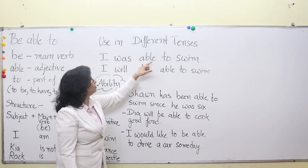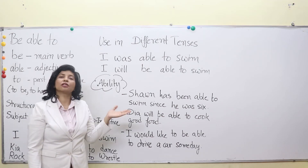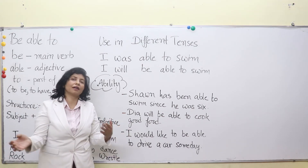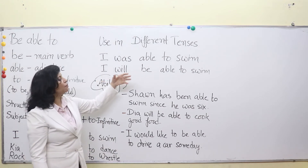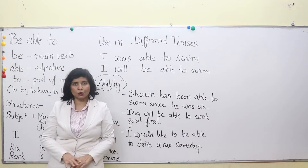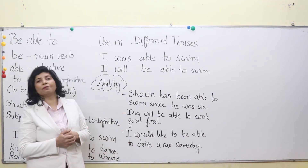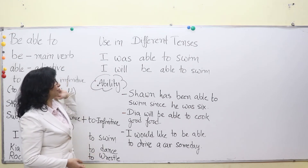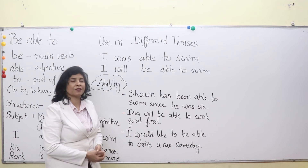'I was able to swim' — that means in the past I was able to swim, I could swim very well, in a pond, river, or swimming pool. Then 'I will be able to swim' — that means in the future, if I practice well, if I learn swimming, I will be able to swim. And for present: 'I am able to swim.' That's very simple.